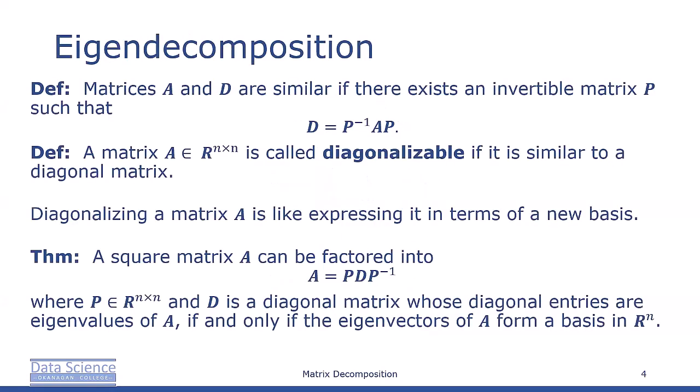We call two matrices A and D similar if there exists an invertible matrix P such that D equals P inverse A P. Now we call a matrix A diagonalizable if it's similar to some diagonal matrix D.